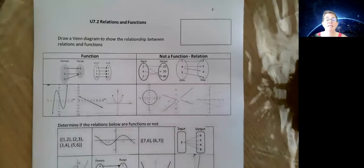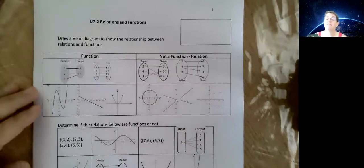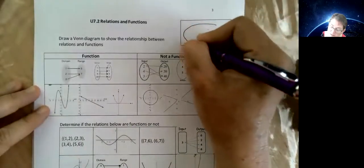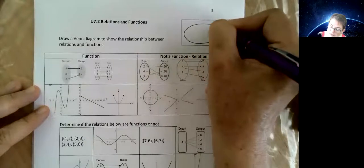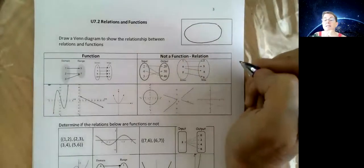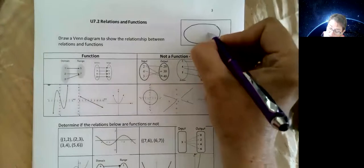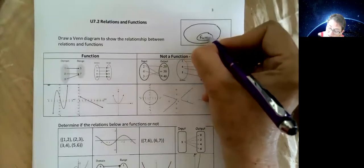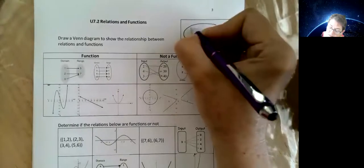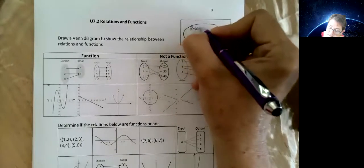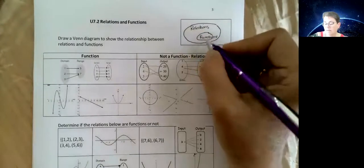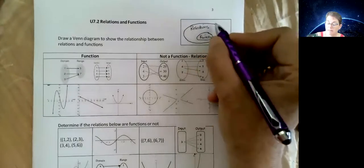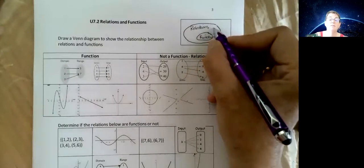Draw a Venn diagram to show the relationship between relations and functions. Okay, so what is it? Exactly, it's a subset. So this is functions and this is relations. So in this case for every x there is only one y. In this case those are going to be the x's that have two different y's.